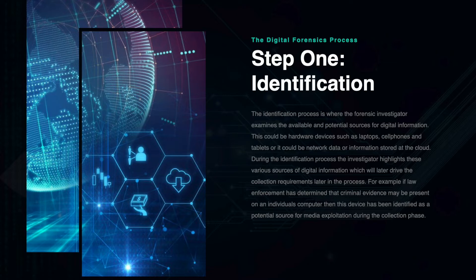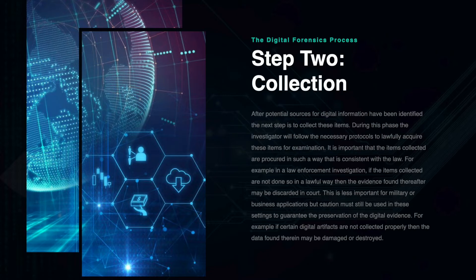For example, if law enforcement has determined that criminal evidence may be present on an individual's computer, then this device has been identified as a potential source for media exploitation during the collection phase. After potential sources for digital information have been identified, the next step is to collect these items.